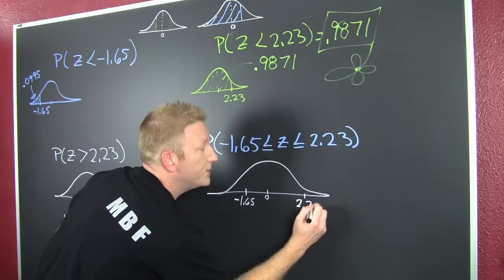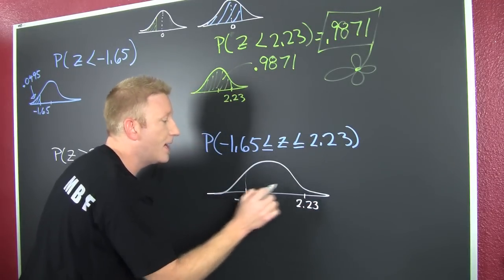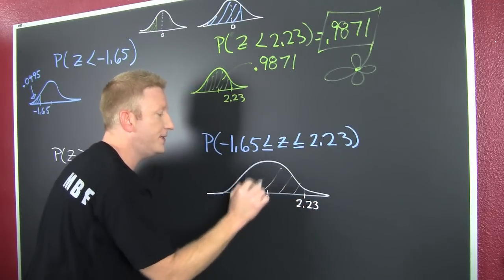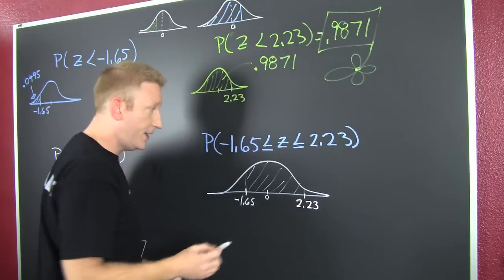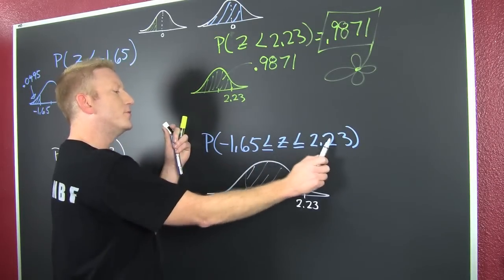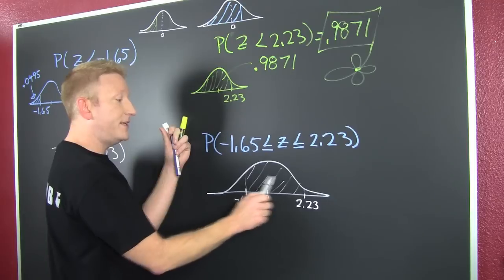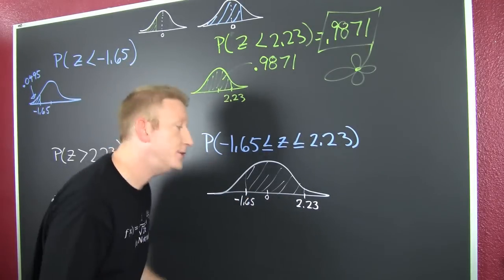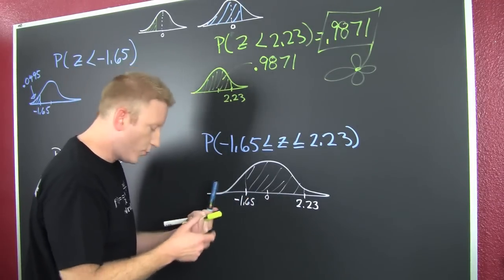And then I'm looking at this one further out, 2.23. And I'm looking for the area in between them. The probability that z is in between those two z values. So I need to find that. And you're like, how if I have two left side intervals?